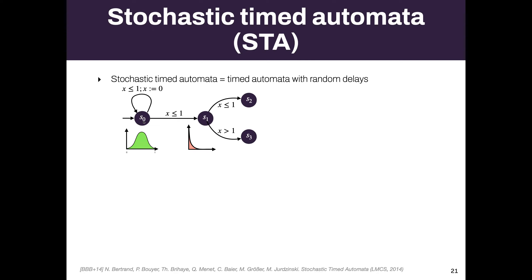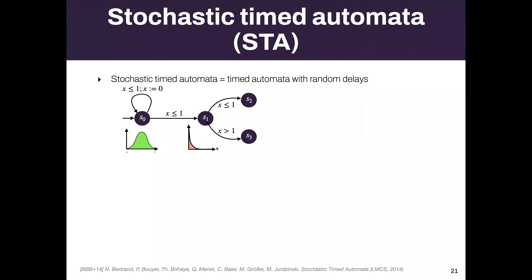In a timed automaton, we have clocks that evolve with time. Whenever the clock x is less than one, we can go to s1, then to s2 if still the case, or to s3. This is a standard timed automaton with several clocks. We attach distributions to delays to know how time evolves. For example, in s0 it's more likely for the next delay to be one-half than close to one or zero. In s1, it's more likely for the delay to be close to zero.